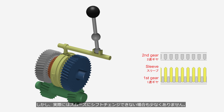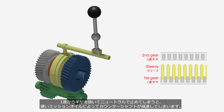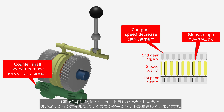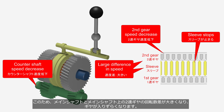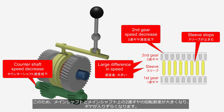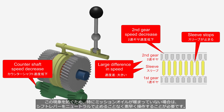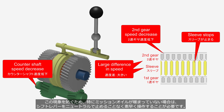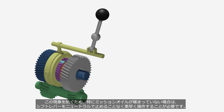However, in reality there are often cases where smooth gear shifting is not possible. For example, when the transmission oil is not warmed up, a bit of technique is required. If you disengage the gear from first gear and then stop in neutral, the counter shaft will decelerate due to the stiff transmission oil. Therefore, the speed difference between the main shaft and the second gear on the main shaft is increased, making it difficult to engage the gear. To prevent this, especially when the transmission oil is not yet warmed up, it is necessary to operate quickly without stopping the shift lever in neutral.